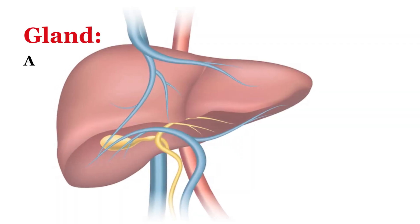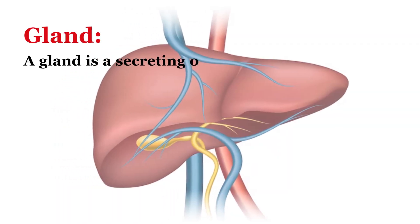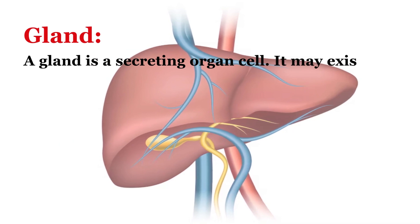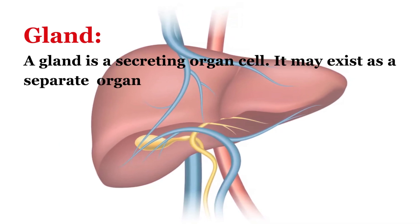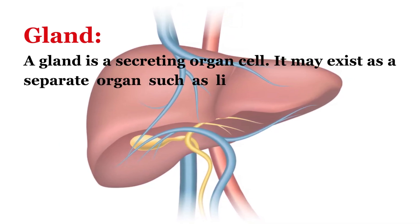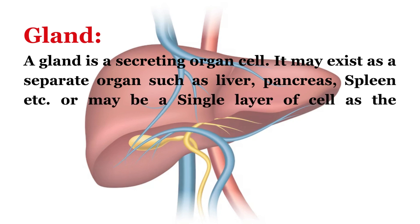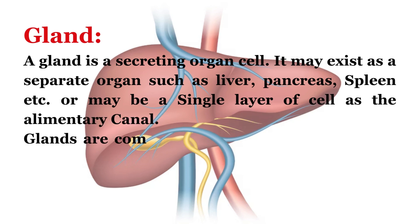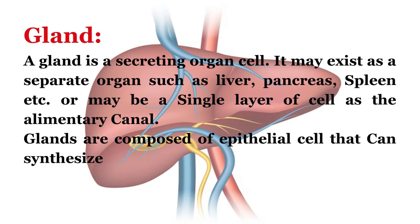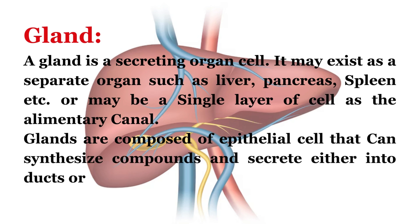A gland is a secreting organ or cell. It may exist as a separate organ such as the liver, pancreas, spleen, etc., or may be a single layer of cells as in the alimentary canal. Glands are composed of epithelial cells that can synthesize compounds and secrete either into ducts or the bloodstream.